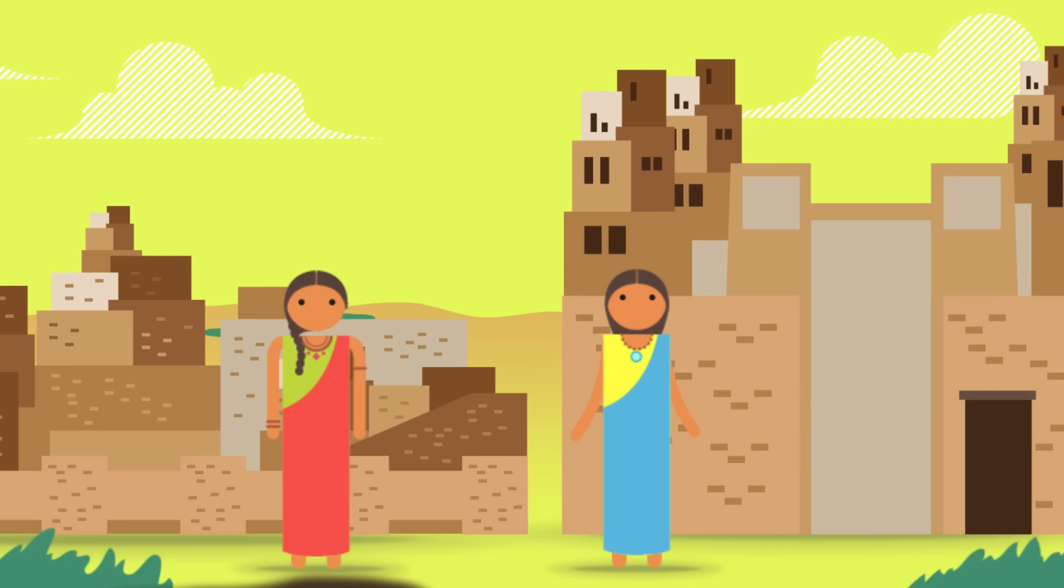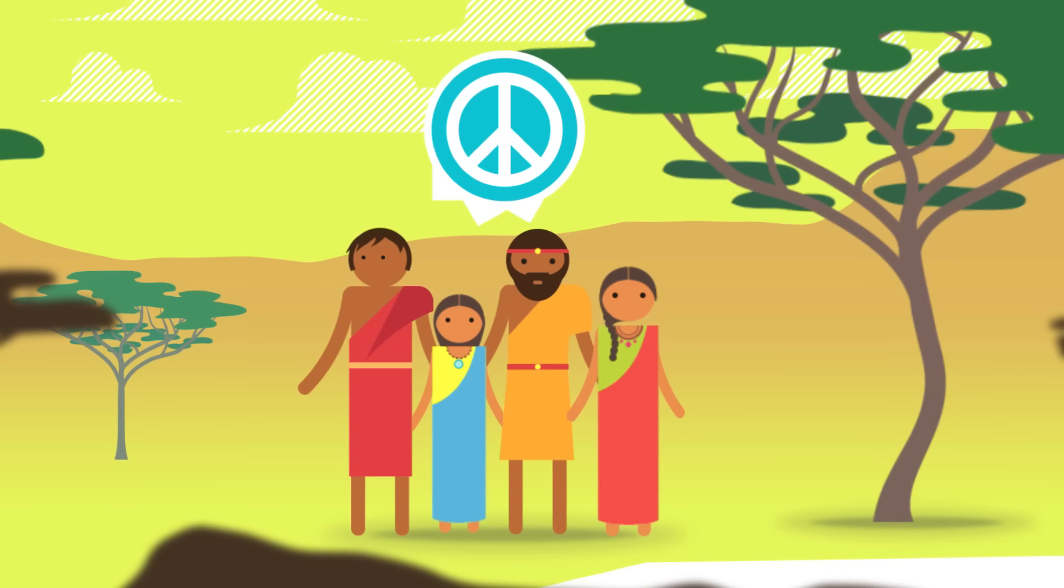But here's the most amazing thing about the Indus Valley people. They were peaceful. Despite archaeologists finding 1,500 sites, they have found very little evidence of warfare and almost no weapons. Thanks, Thought Bubble.